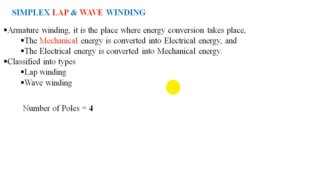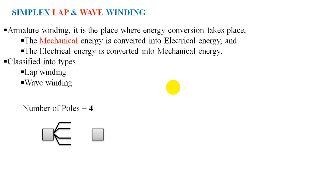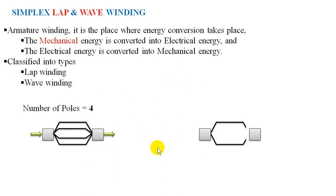For example, if we have four poles, we have four poles across two carbon brushes. Across these two brushes, if there are four parallel paths — current entering and current leaving across these brushes. Now let us see another type of winding: two carbon brushes and only two parallel paths irrespective of the number of poles. So this is your lap and this is your wave.